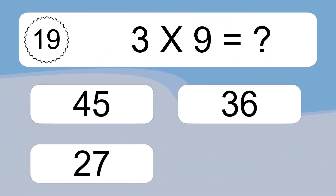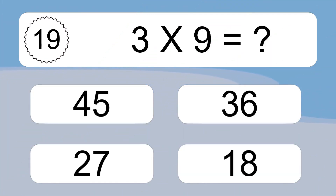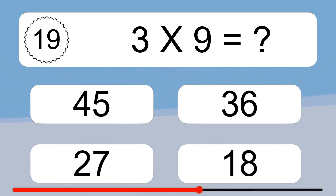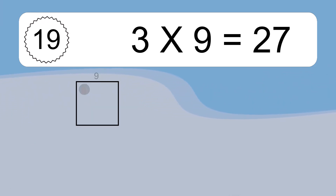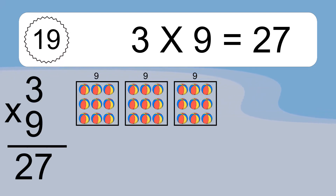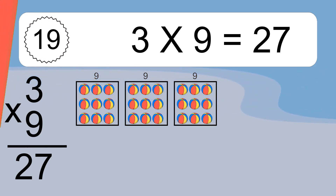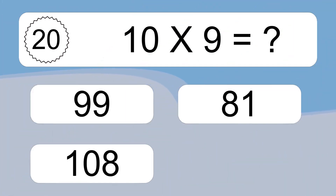3 times 9 equals what? 3 times 9 equals 27. We have 3 boxes, and each box has 9 colorful balls inside. If you count all the balls in all the boxes together, you will have 3 times 9 balls. This equals 27 balls.